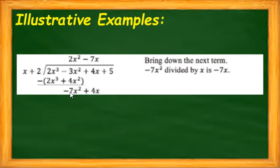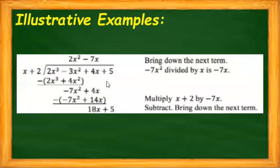We repeat the process. Our first term is negative 7x squared. We divide it again by the first term of our binomial which is x. So negative 7x squared divided by x will give us negative 7x. We'll place it on top in the quotient part. Then multiply negative 7x by our binomial or divisor. So negative 7x times x gives us negative 7x squared, and negative 7x times 2 gives us positive 14x.